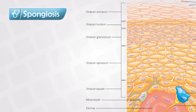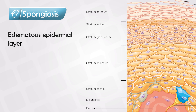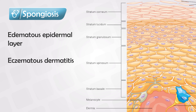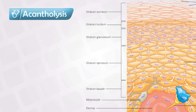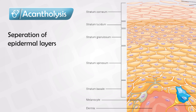If there is a lot of fluid trapped within these layers, it will become spongy — this is known as spongiosis, and we see this in eczematous dermatitis. Sometimes there will be separation between these layers, meaning there is free space in between, and this is known as acantholysis — we see this in pemphigus vulgaris.